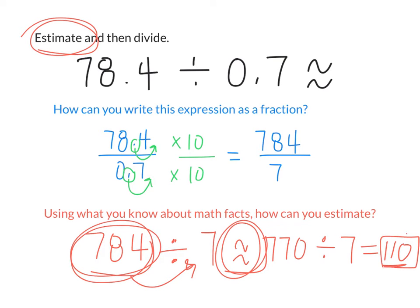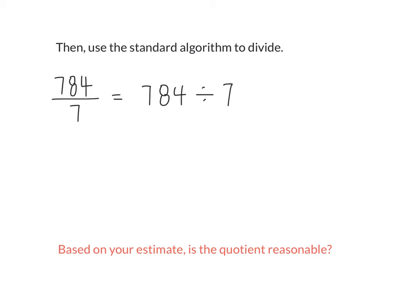So that tells you, is this the exact answer to this math expression? No. But it's telling you that your answer should be pretty close to one hundred and ten. Now that we have our estimation in our head, we know that the answer should be pretty close to what number? One hundred and ten. Now we can use the standard algorithm to divide.